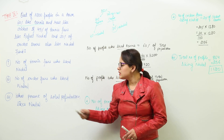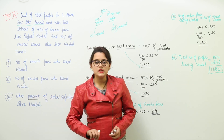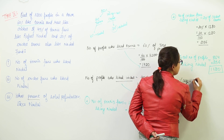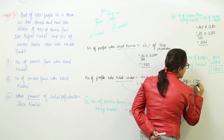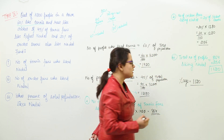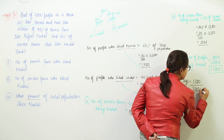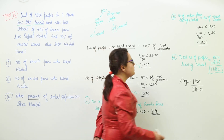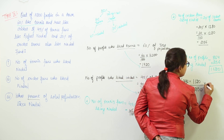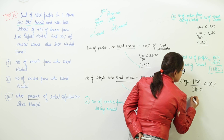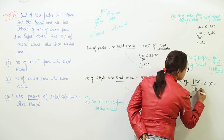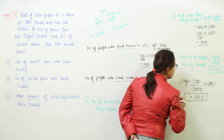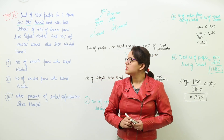But we have to find the percentage. The percentage would be 1120 upon 3200 into 100%. 1120 out of the total 3200 is liking Nadal. Cancelling the zeros, we get exactly 35% of the total population liking Nadal.